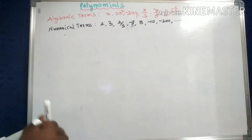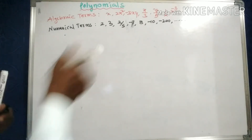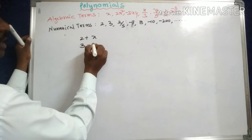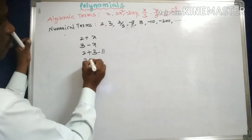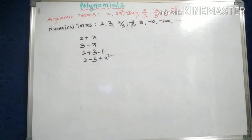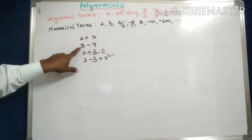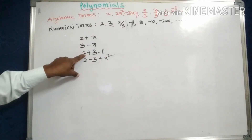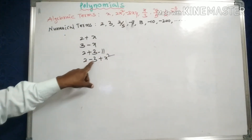Now, what is the meaning of an expression? The terms connected by the symbols plus or minus is called an expression. For example: 2 plus x, or 3 minus x, 2 plus 3 minus 11, and 2 minus 3 plus x squared. Here, 2 is a numerical term and x is an algebraic term.